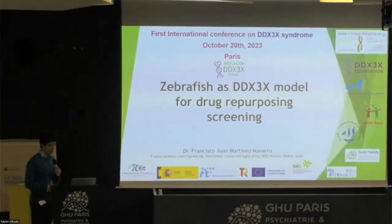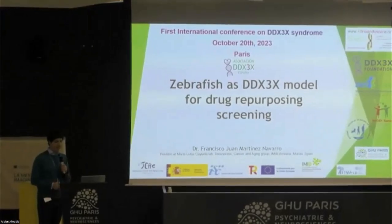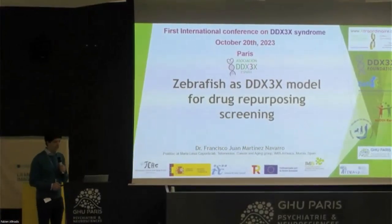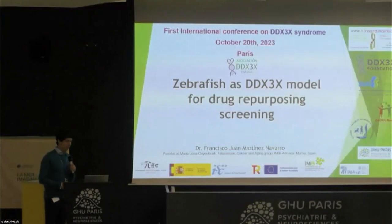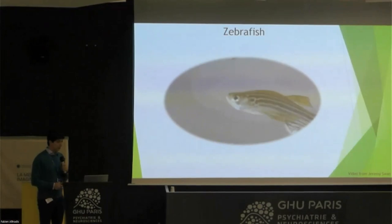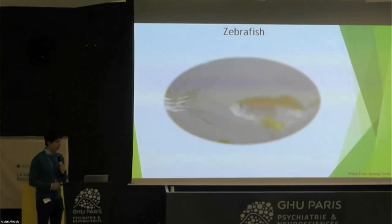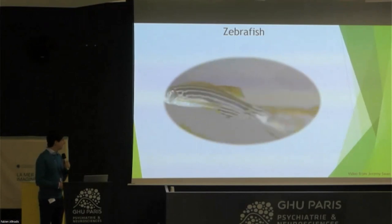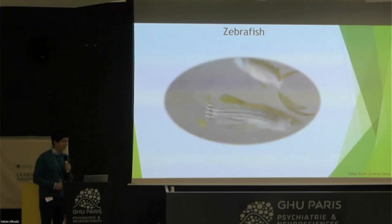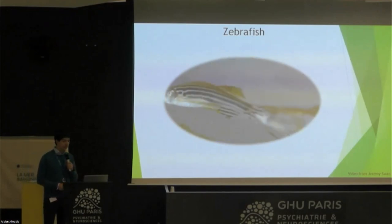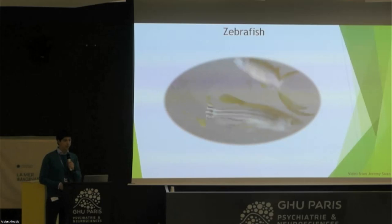We work with an animal model that is a little bit special. Most of you probably know the mice model, but in our case, we use the zebrafish model — a small fish that is around three centimeters when adult, with stripes that resemble a zebra. It's a freshwater fish that can be used for modeling different diseases.